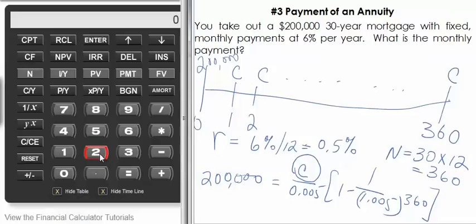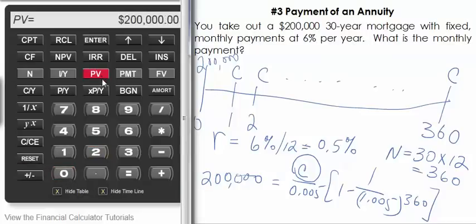So we'll put $200,000 for the PV, 0.5 for the periodic rate, 360 for the N. There is no lump sum or balloon payment at the end, so let's make sure we put a zero there for the FV.